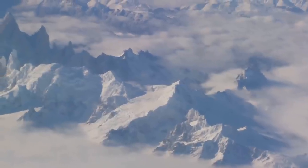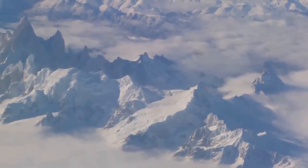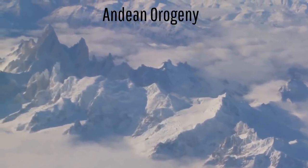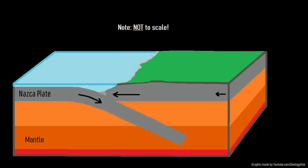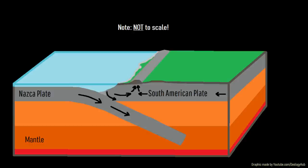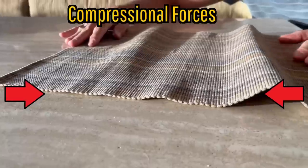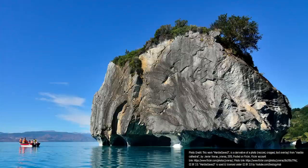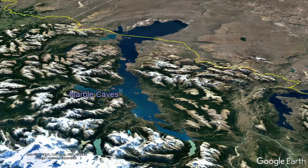Then, around 30 million years ago, a major mountain building event occurred known as the Andean orogeny. As an oceanic plate subducted into the mantle below, it transferred compressional forces into the South American plate, causing rocks to deform, fold, and be uplifted. It was during this process that the limestone turned into marble while also retaining significant folds which can be seen in the marble caves.